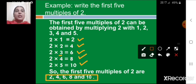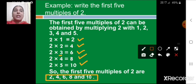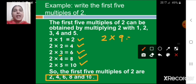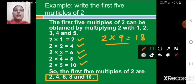Now suppose I ask: what will be the ninth multiple of 2? We write the number 2, and since it is the ninth multiple, we multiply by 9. So 2 × 9 = 18. In this way we find the multiples of any given number.